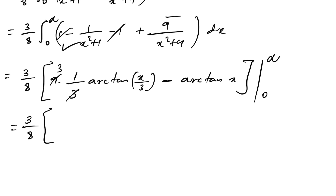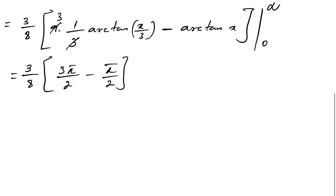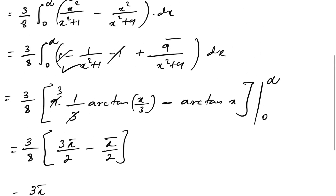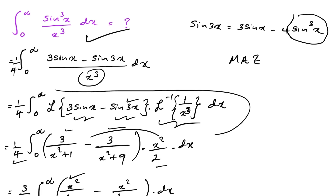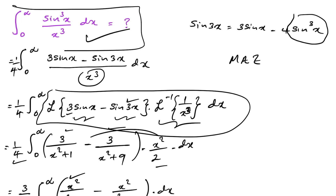Evaluating the limits: arctan(0) equals 0, and arctan(infinity) equals π/2. So we get 3 over 8 times (π/2 minus π/2) — wait, more carefully: 3 times π/2 minus π/2, which is 3π/2 minus π/2, giving π. So the final answer is 3π/8. This is the answer for this nice integral using the Mellin identity of Laplace transform. In the next video, we'll evaluate the same integral using a triple integral method. Thank you for watching.